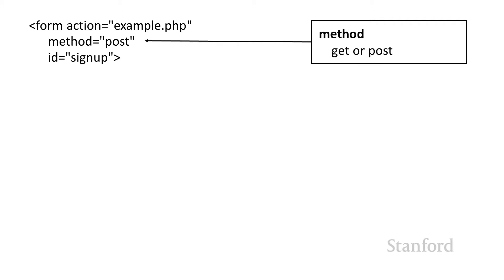So that's the action. But there's also this method attribute, and this turns out to be quite important — both when you're setting up a form for real interaction with a web server, and because it has a number of implications for how users interact with the form. You'll likely discover when we talk about this that you've run into these situations before and wondered why the computer behaves differently with forms in different cases. This setting has very visible effects to the user.